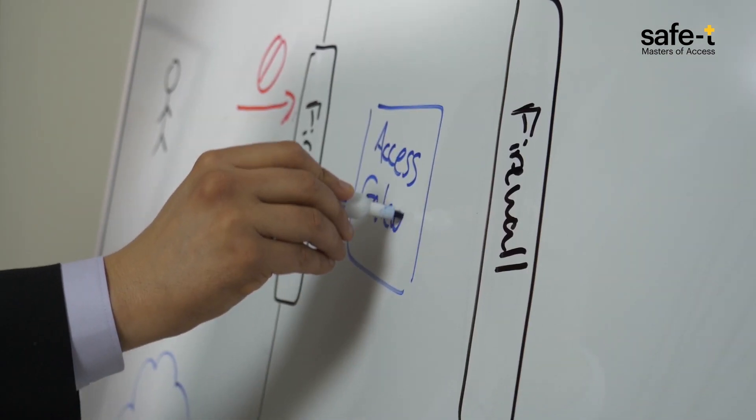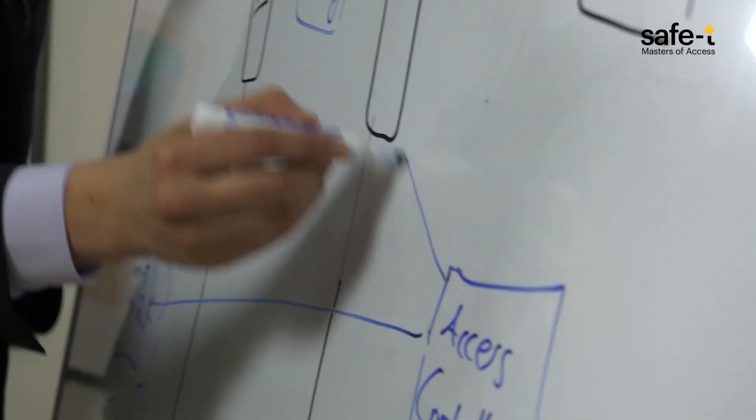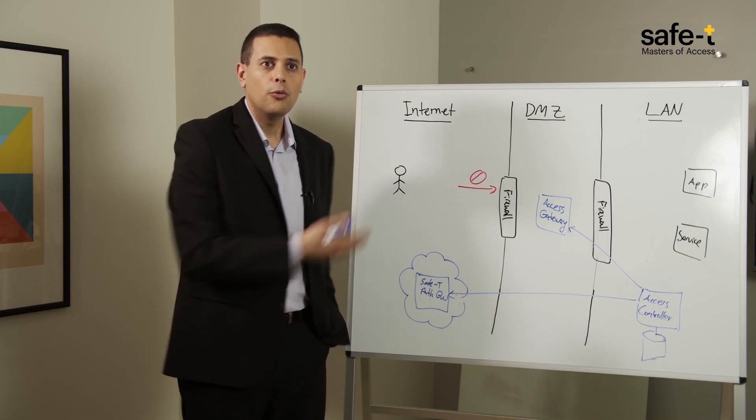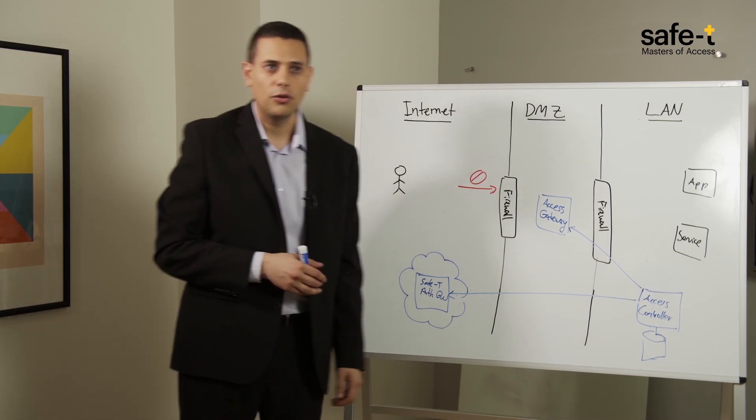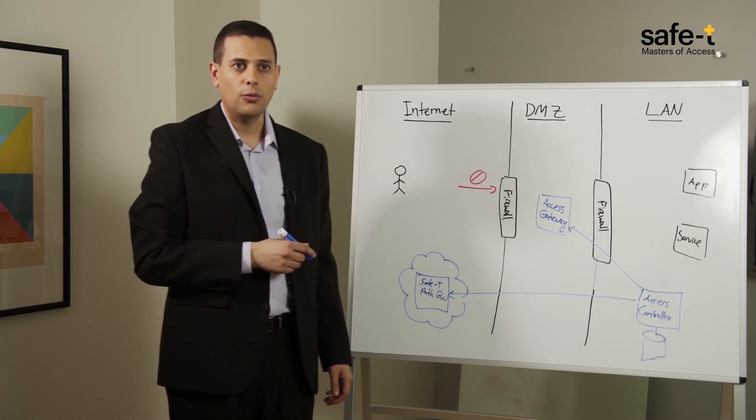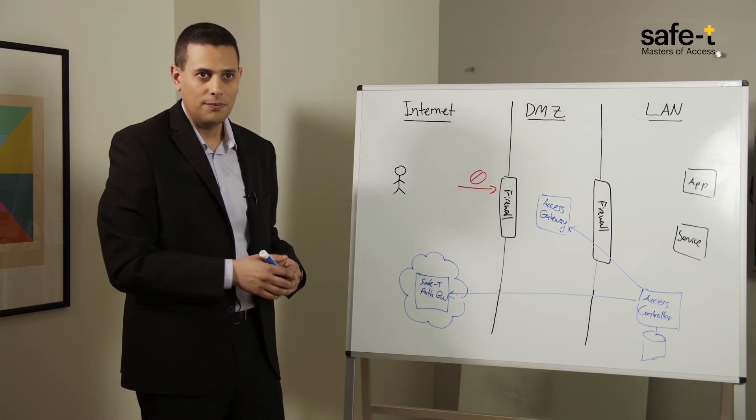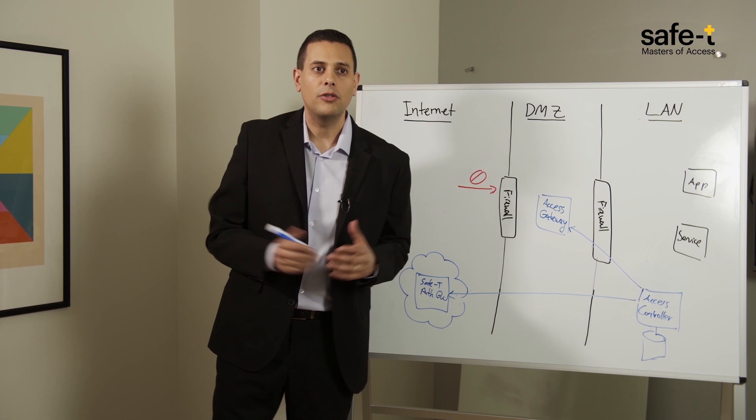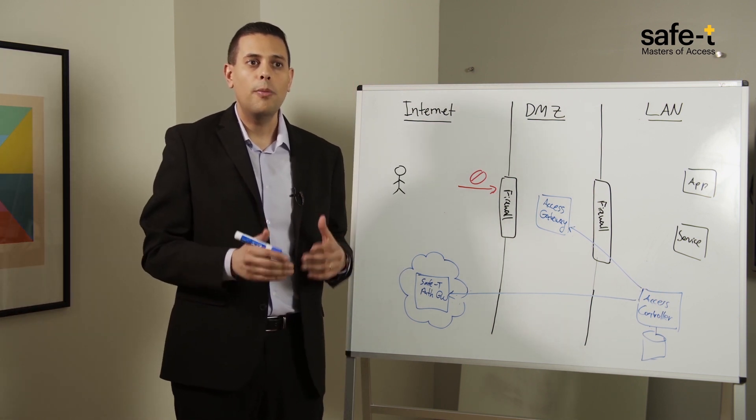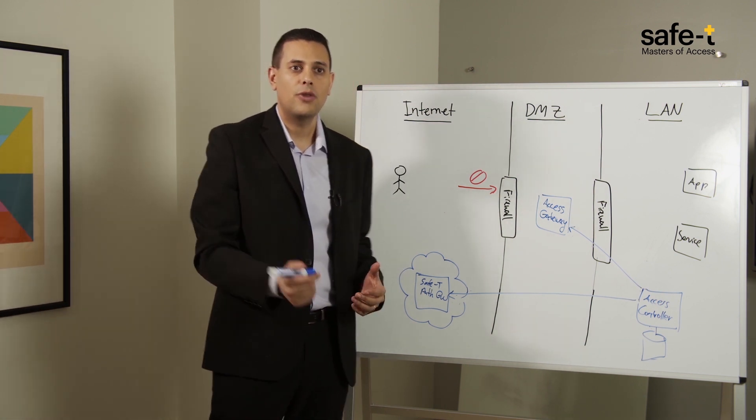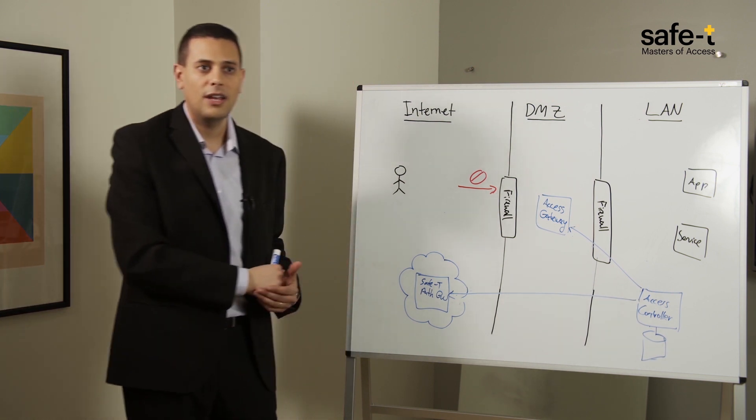Then, Access Controller, once again utilizing reverse access and an outbound connection, reaches out to the third and final piece of the solution, the Safety Access Gateway, which resides on the Internet Facing Network segment, or DMZ. While until now every inbound network packet has been dropped, it instructs it to now open a port and start accepting inbound traffic towards that specific destination.